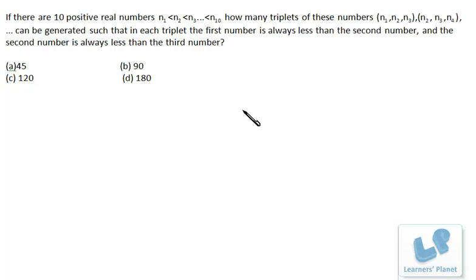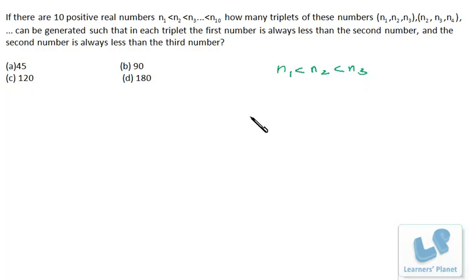We have 10 numbers in ascending order and we have to make triplets where all three numbers are in ascending order — first less than second, second less than third, that is N1 < N2 < N3. It's a very simple concept. First of all, we have to choose three numbers out of 10. So how many triplets can we make? That's 10C3. From 10C3 we get triplets like N1, N2, N3 or N2, N3, N4 and so on.